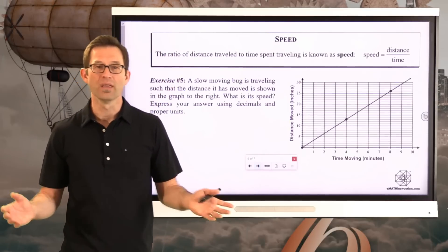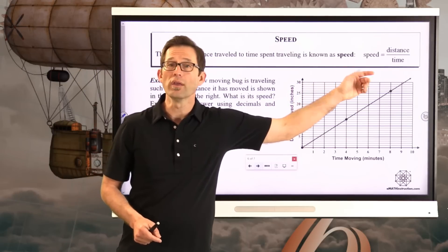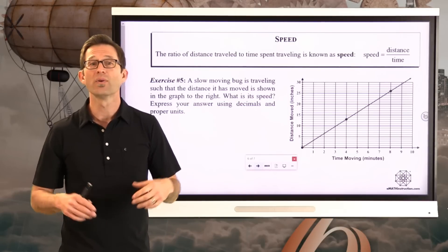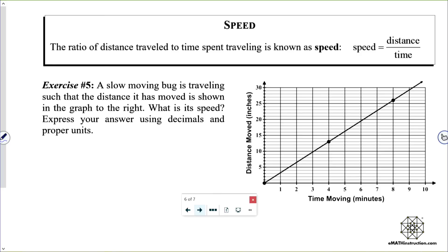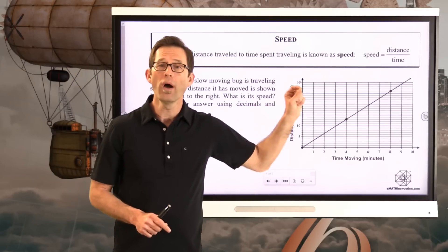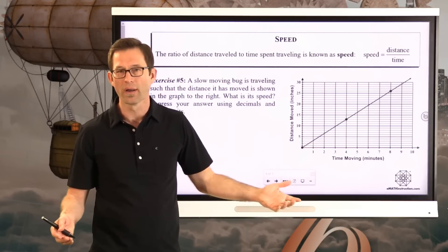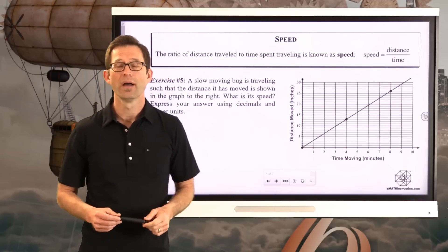Units in problems really help you think about what's going on. Including units in the ratio before reducing to a unit rate makes it easy to see that the unit rate is the speed in miles per hour, and watching the hours cancel out confirms the right operation. Speed is one of the most important unit rates of all — it's simply the unit rate you get from the ratio of distance to time.